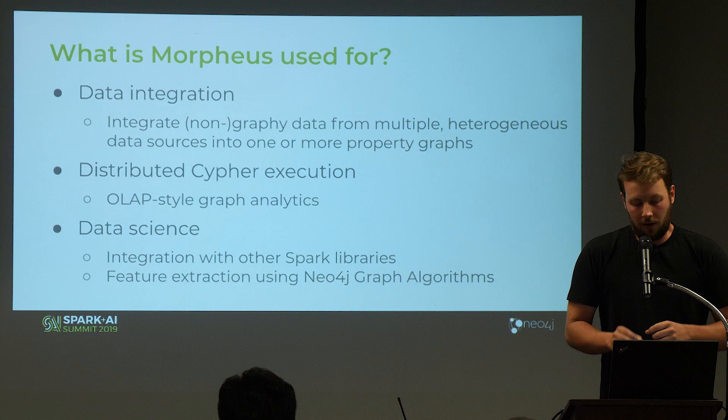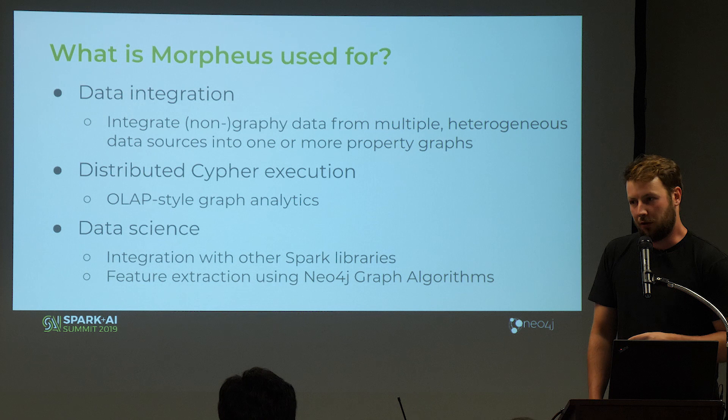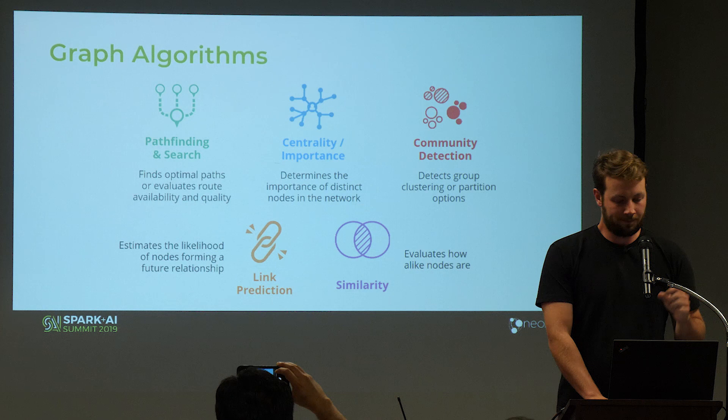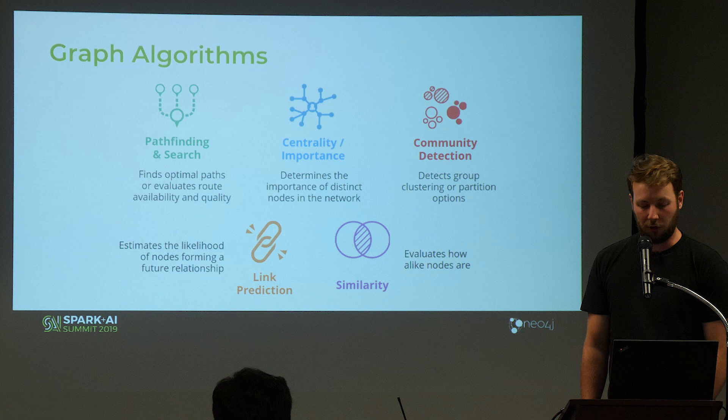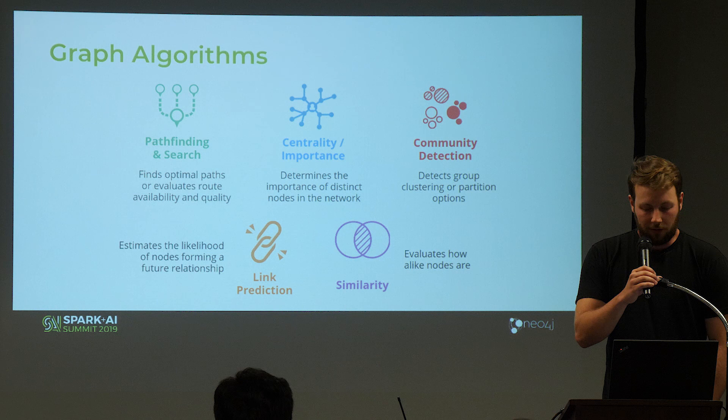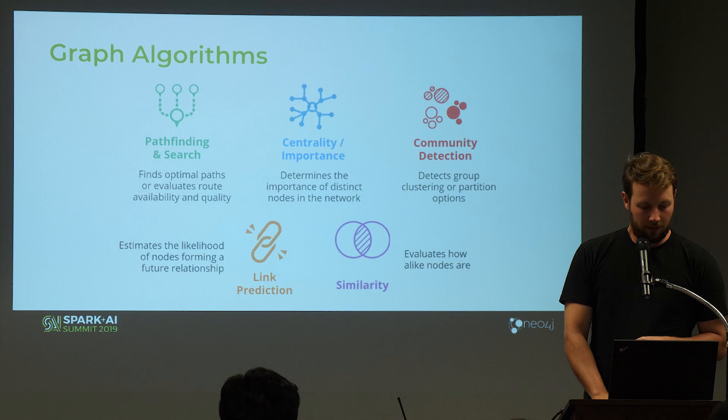Graph algorithms are organized into categories: on the top left there is pathfinding and search, which includes shortest path queries, and that's one of the most prominent ones. Important algorithms include PageRank as well.